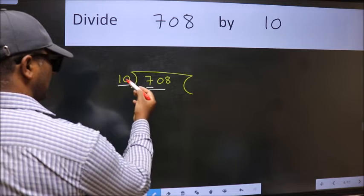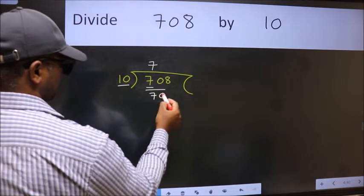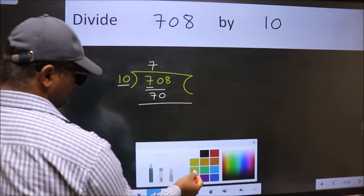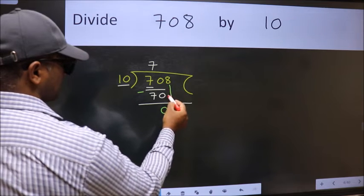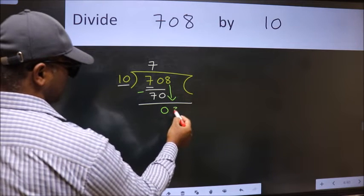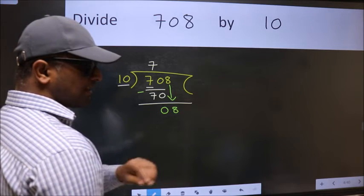When do we get 70 in the 10 table? 10 times 7 is 70. Now we should subtract. We get 0. After this, bring down the beside number. So 8 down. After this step, the mistake happens.